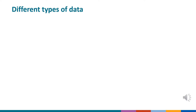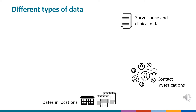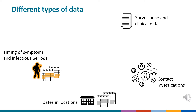Additionally, public health officials routinely need to integrate and analyze different types of data during TB contact, cluster, and outbreak investigations. These can include surveillance data, epidemiologic links and other data from contact investigations, chronology data on dates and locations, and data on the timing of symptom onset and infectious periods.